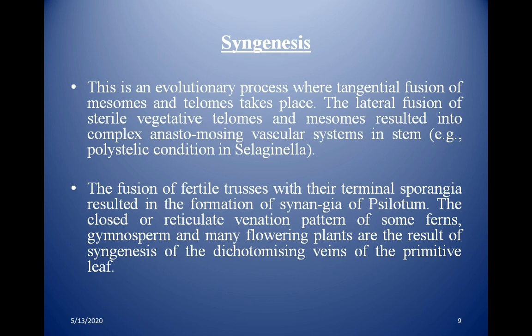Syngenesis is an evolutionary process where fusion of mesomes and telomes takes place. The lateral fusion of sterile vegetative telomes and mesomes results in a complex anastomosing vascular system in the stem — for example, the polystelic condition in Selaginella. The fusion of fertile trusses with their terminal sporangia results in the formation of synangia, as seen in Psilotum. The closed or reticulate venation pattern of some ferns, gymnosperms, and many flowering plants is also the result of syngenesis of dichotomizing veins of primitive leaves.